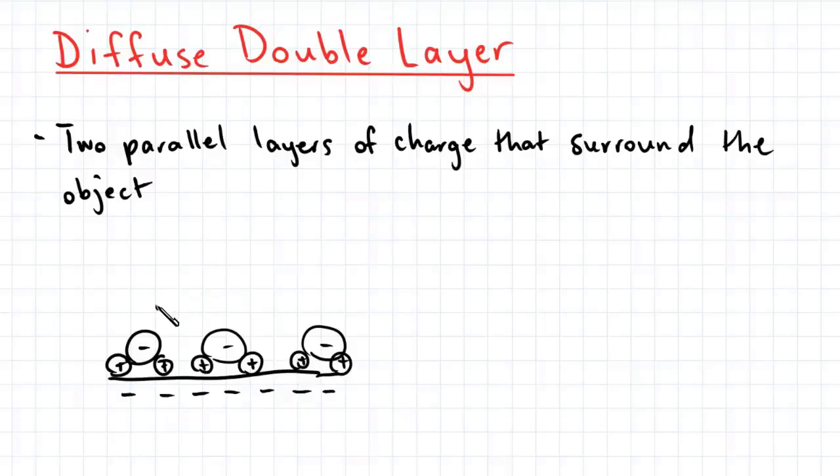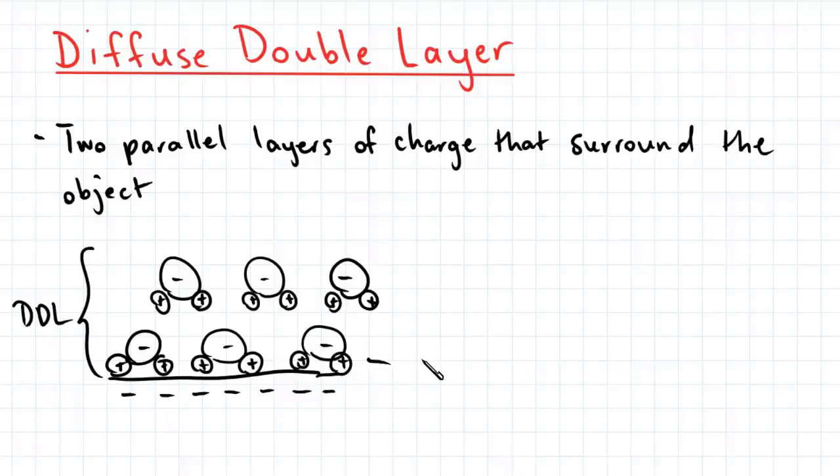In a diffuse double layer, we have a second layer of water molecules, which are loosely associated with the surface of the clay crystal. So that's our diffuse double layer, and this first layer is adsorbed water.